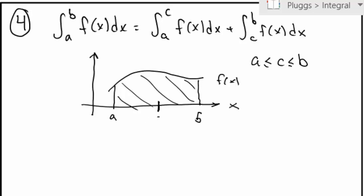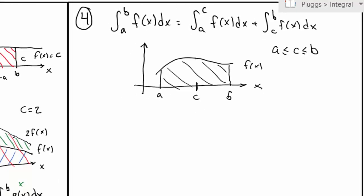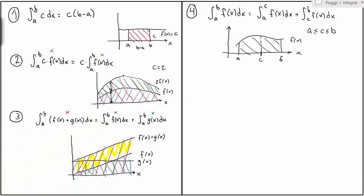Now I pick a constant c, which is somewhere in between a and b. The first integral on the right, well, that's this part here. And the second integral on the right, well, I should go from c to b, so that's this part here. And if I add these two parts together, I will get the area represented by the first integral.